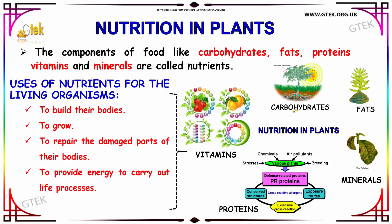The uses of nutrients for living organisms are: they are used to build their bodies, they are used for growth, they repair the damaged parts of their bodies, and they provide the energy to carry out life processes. These are all the uses of nutrition in plants.